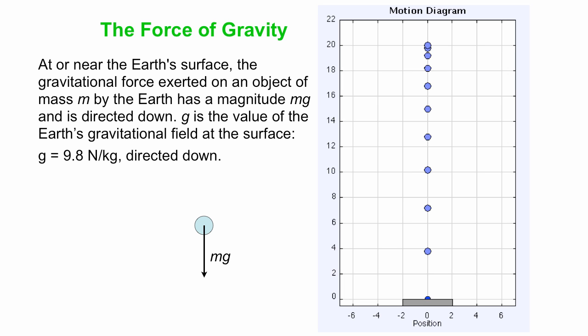And there's what we call our free body diagram. Free body diagram is a diagram that shows all the forces acting on the object. So as the ball falls, it's just got the gravity acting down. It's a constant force, and so it gives a constant acceleration.